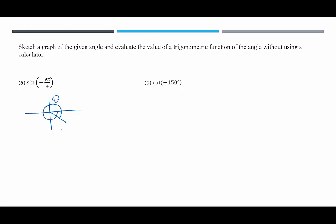To help us evaluate sine of negative 9π over 4, we need to determine the reference angle for theta. The reference angle is the acute angle that's between the terminal side of theta and the x-axis, which would be right here.